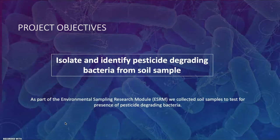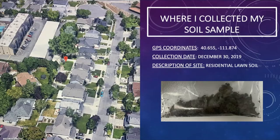We're collecting these on the behalf of the ERSM. The location where my soil sample was collected was at coordinates 40.65 latitude, negative 111.87 longitude, in the city of Murray, Utah. The collection date was December 30th, 2019, and as you can see with the pinpoint on the left, the soil location was a residential lawn soil.